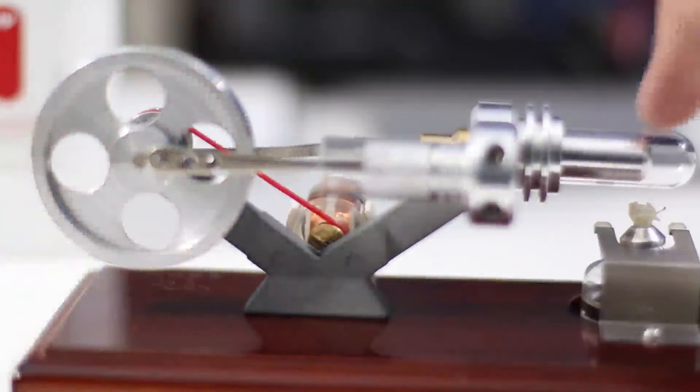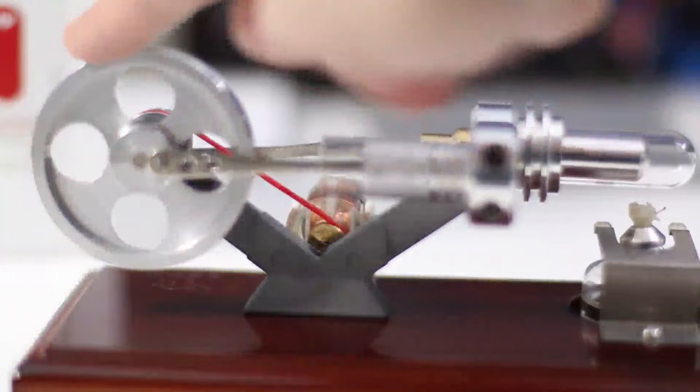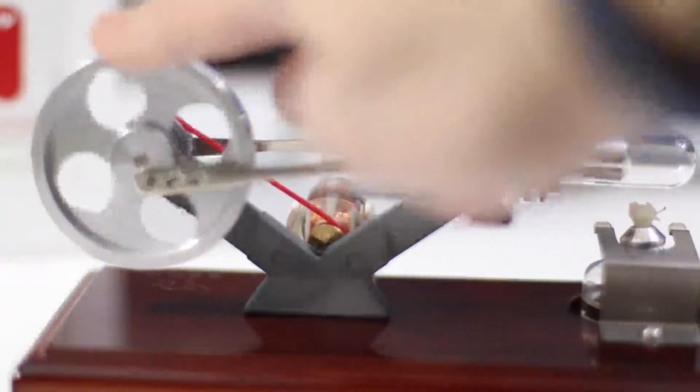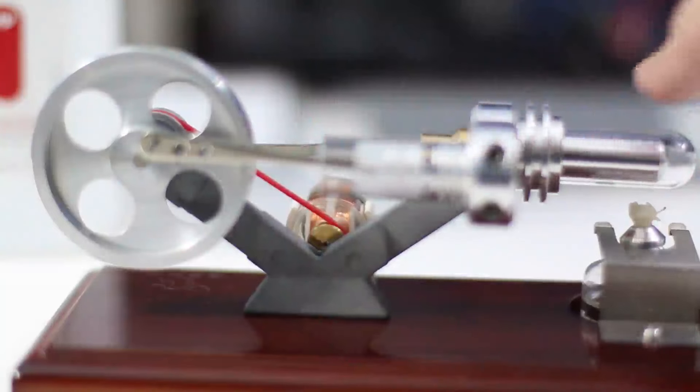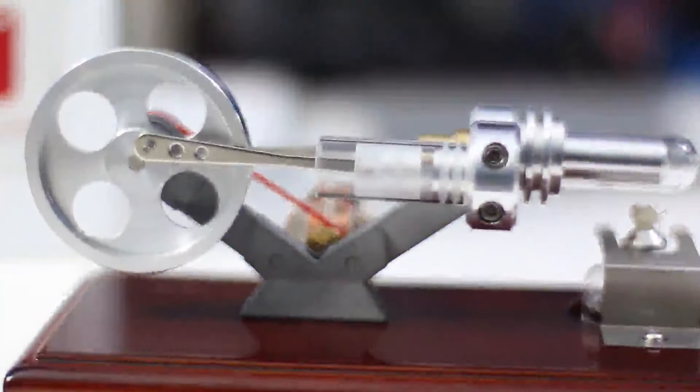So on a full cycle, what's going to happen is the hot air will push that side of the piston, and it'll spin the flywheel, pushing the cold air back into the cylinder, and then you get essentially a full cycle.